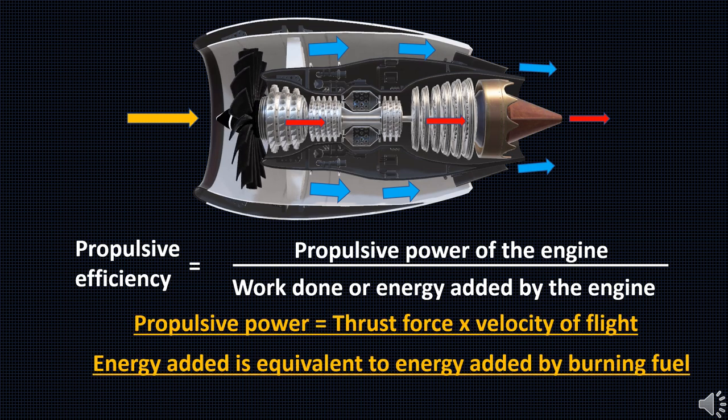The bypass air produces majority of the thrust in turbofan without energy addition. Thus turbofan has high propulsive efficiency than the turbojet engines. Remember, these comparisons are applicable in the subsonic flow regime only.